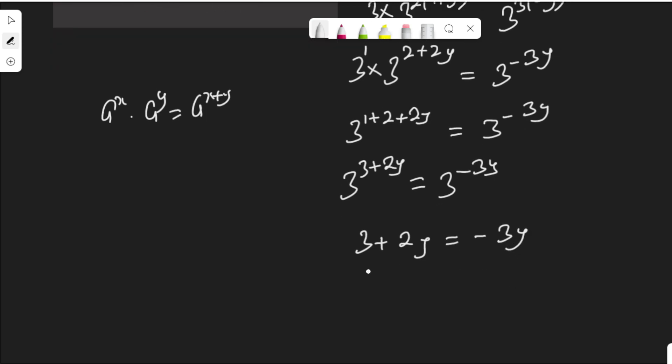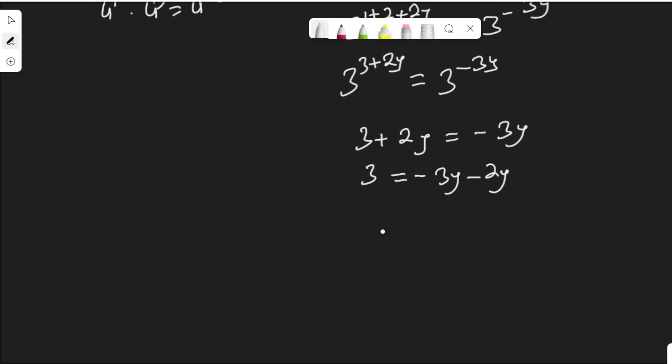Collecting terms, 3 is equal to negative 3y. When these two cross to the other side, negative 2y. That means 3 is equal to negative 3y minus 2y, which is negative 5y.